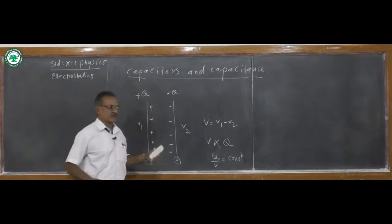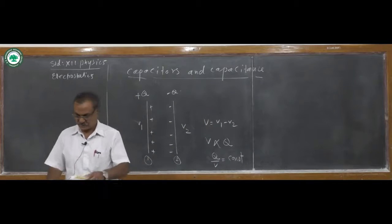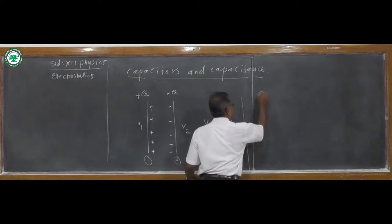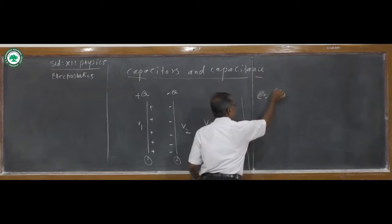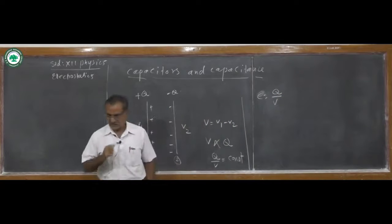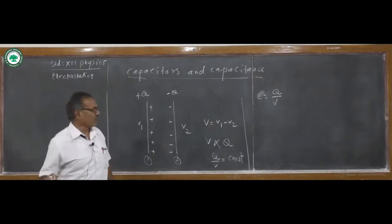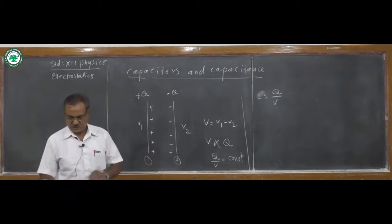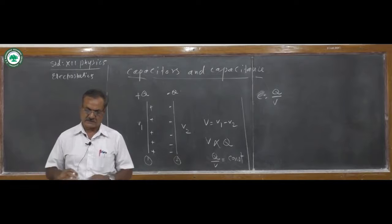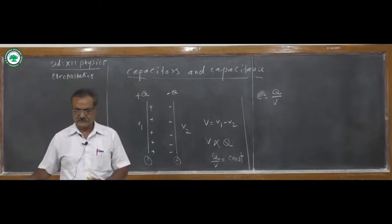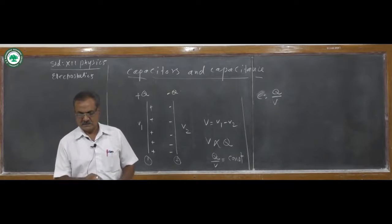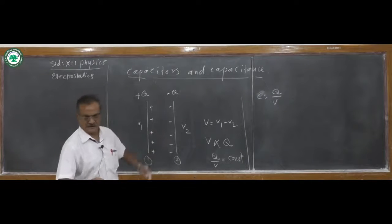If you have a proportional sign, then the ratio Q upon V is constant. This constant is called the capacitance of the capacitor. Capacitance C = Q/V. C is constant and is called capacitance of the capacitor, which depends on the size, shape, and separation of the system of two conductors.